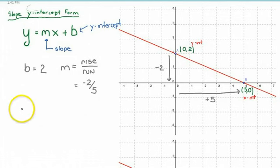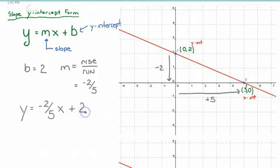Once I have this information, I can write out the relationship that represents the line in slope y-intercept form. So y is equal to negative 2 over 5x plus 2. And I'm done.